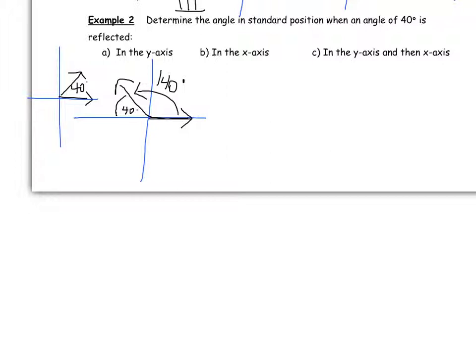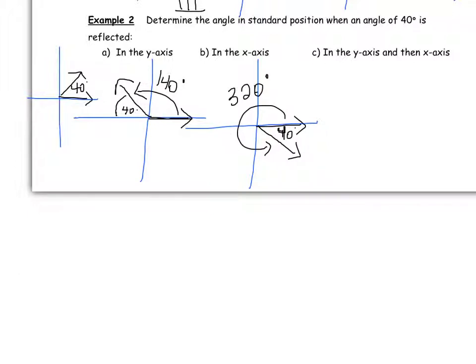Reflecting the original 40 degree angle over the x-axis moves the terminal arm to quadrant four. Since the initial arm stays on the positive x-axis, the angle in standard position is 360 subtract 40, which equals 320 degrees.